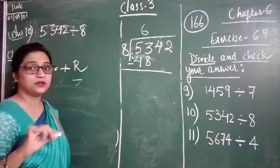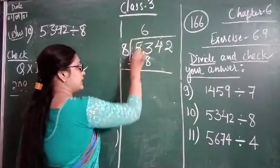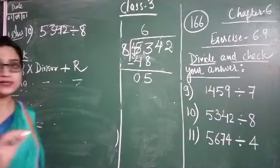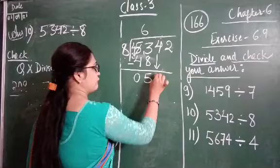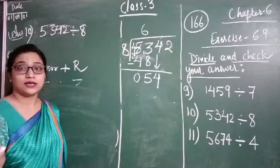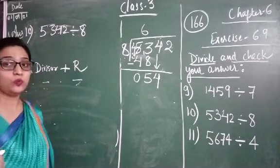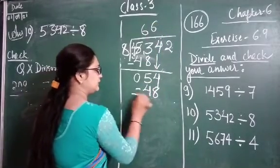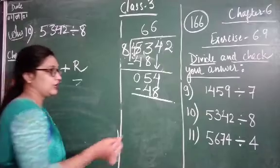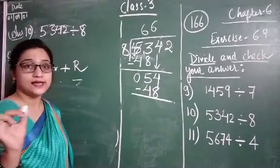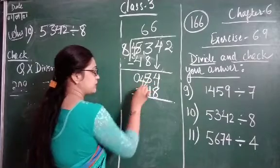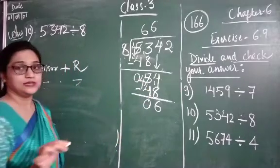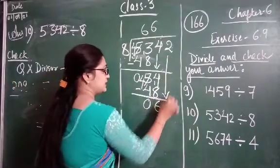Now subtract. 3 minus 8 is not possible since 3 is less than 8, so we borrow 1 — it becomes 13. 13 minus 8 equals 5, and 4 minus 4 equals 0. The next number is 54. 54 is not in the table of 8, so we need the number less than 54. 8 sixes are 48. 14 minus 8 equals 6, and 4 minus 4 equals 0.